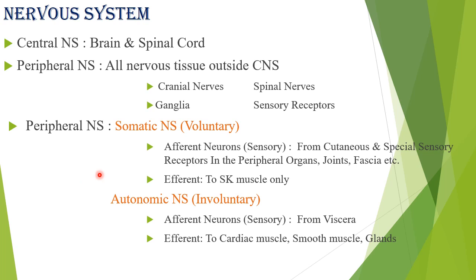In the somatic nervous system, the afferent neurons carry impulses from the cutaneous part of the body, special sensory receptors in peripheral organs — such as touch, vision, hearing, smell — and also from joints and fascia (fibrous tissues covering organs). In the autonomic nervous system, the afferent neurons carry impulses from viscera — the important organs in the abdominal cavity, like the stomach, intestine, kidneys, and pancreas.